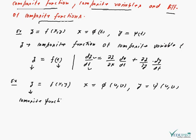Here z is the composite function, and u and v are the composite variables. So z is the composite function of composite variables u and v.